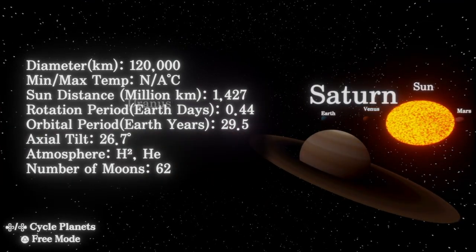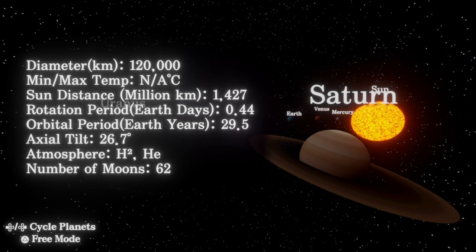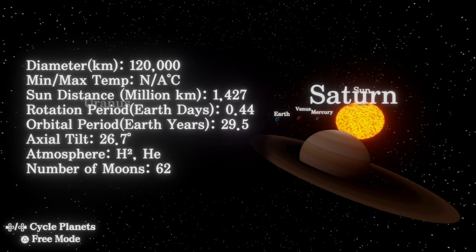Saturn, second largest planet in the solar system. Its prominent feature is its rings, which are made up of ice particles, rocky debris, and dust.